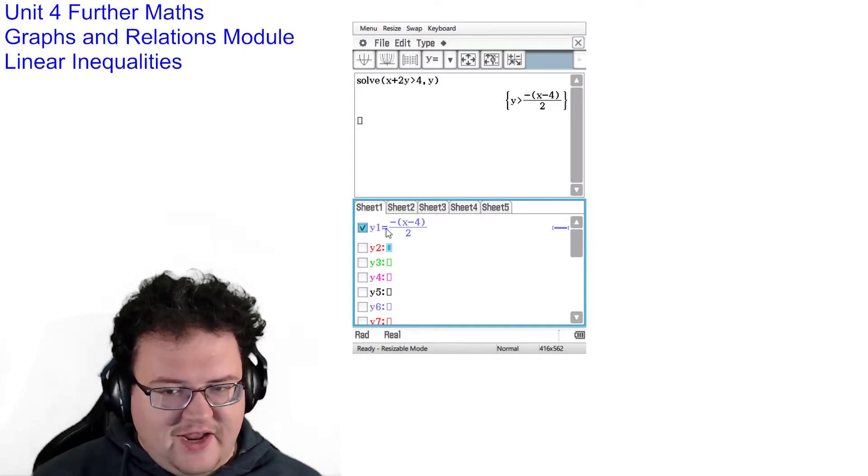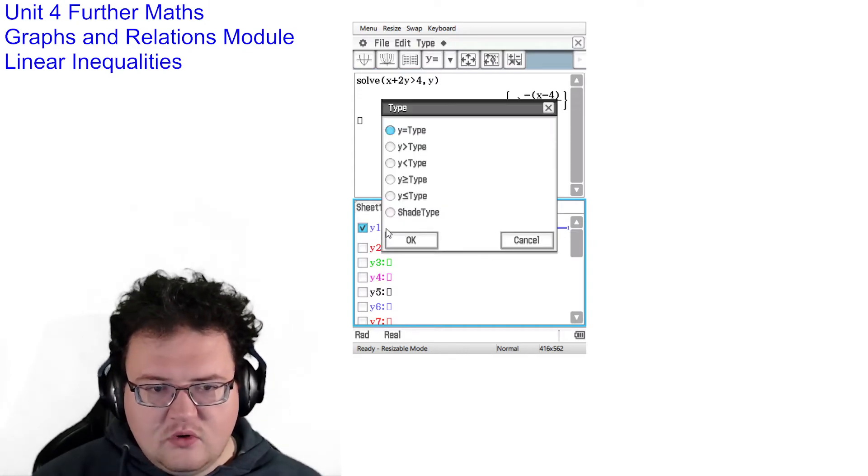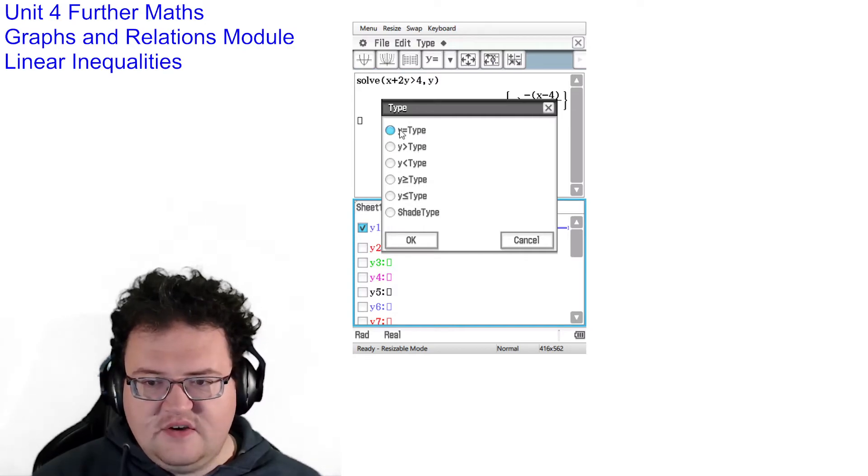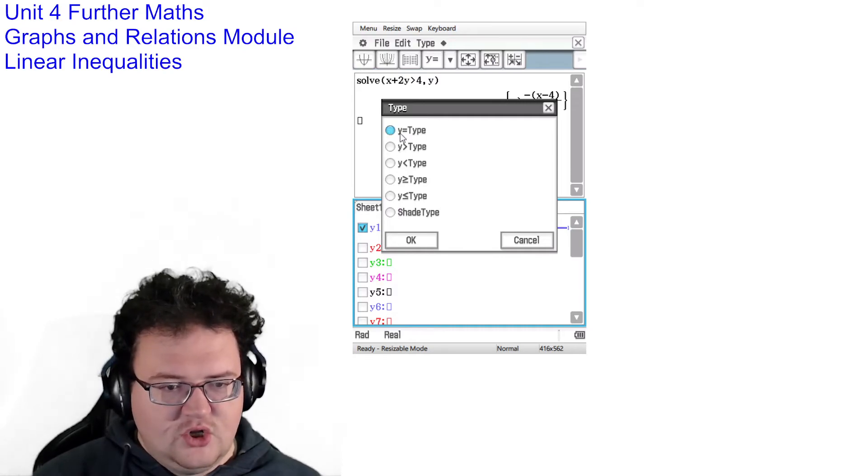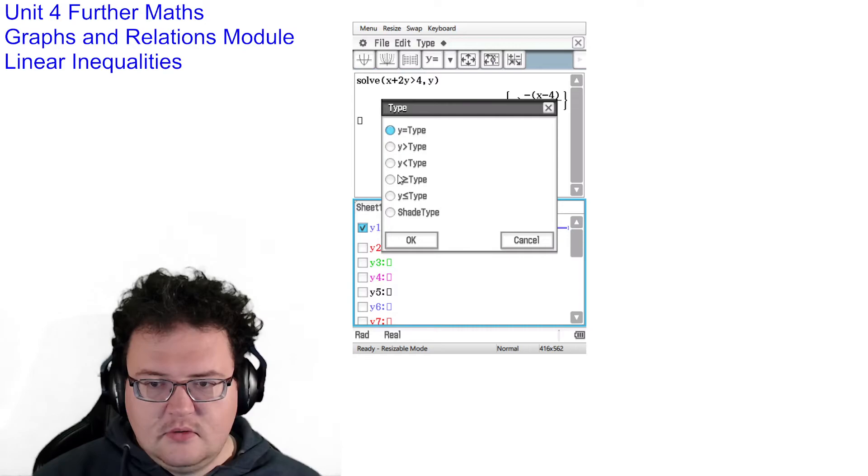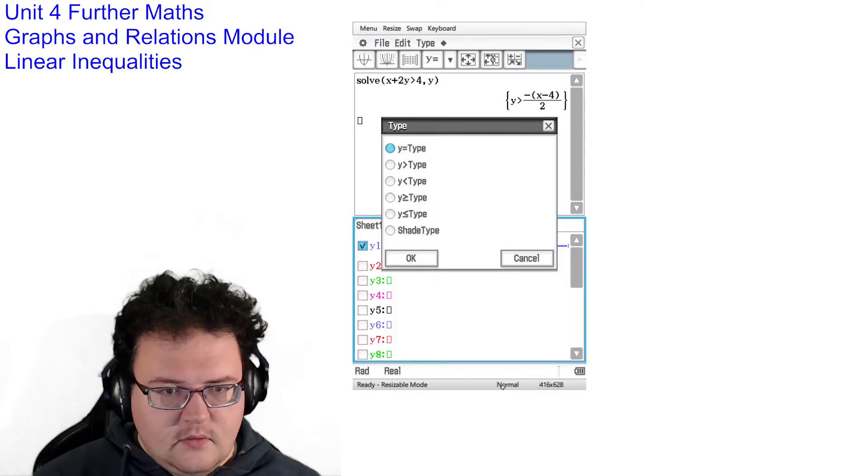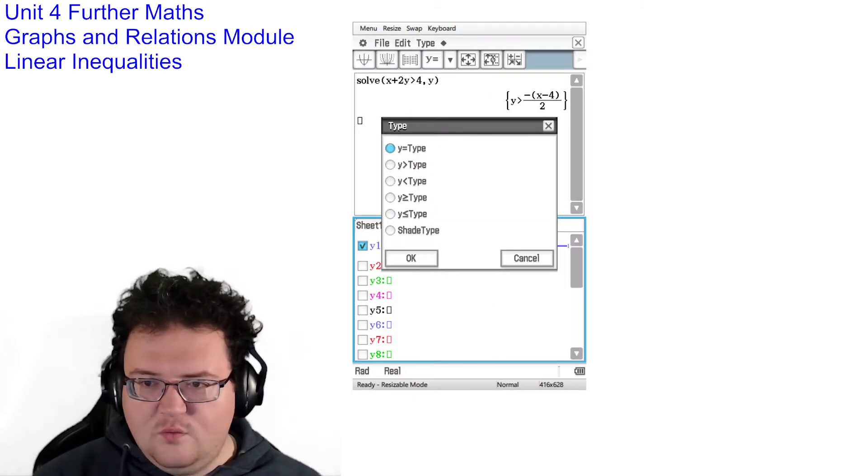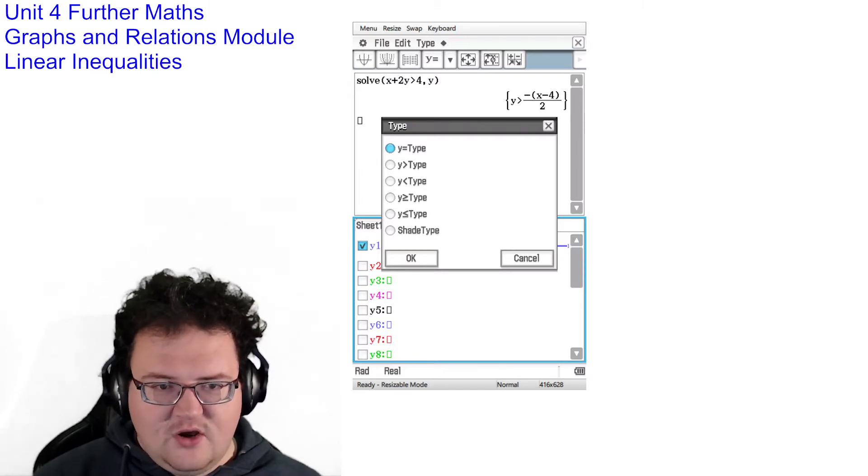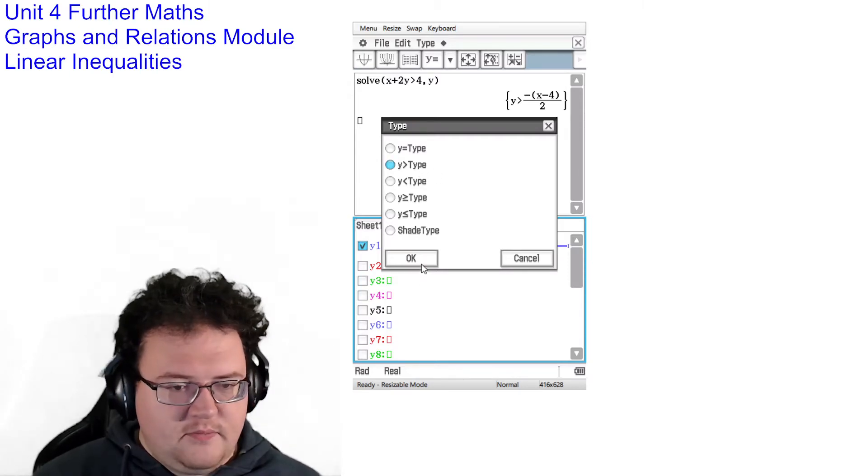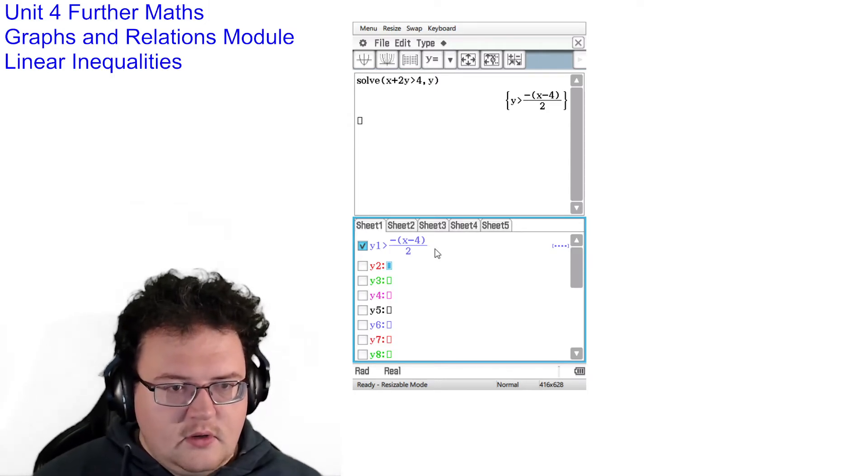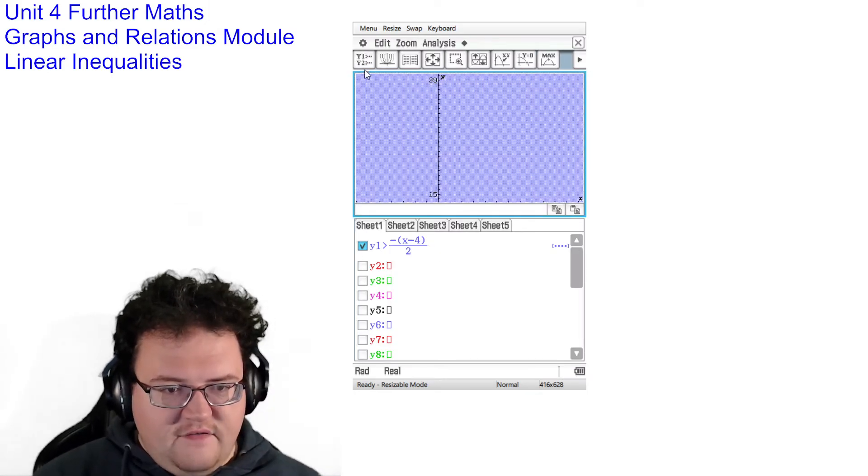What I can now do is if I click or tap on the equals, it brings up all these different types of equations. Including our inequalities. So in this case here, we need to look at the equation that was given to us before. In this case here, it is y is greater than all of that. Make sure they line up properly. And now if I hit graph and I draw that graph.